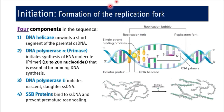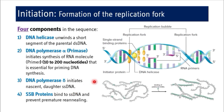The replication fork has four components: DNA helicase, DNA polymerase alpha which has primase activity, DNA polymerase delta, and single-strand binding proteins. In eukaryotes, DNA polymerase alpha has primase activity rather than a separate primase enzyme as in prokaryotes. It initiates synthesis of the RNA primer, which has a length of 10 to 200 nucleotides, essential for priming DNA synthesis. DNA polymerase delta initiates nascent daughter single-stranded DNA by polymerization.